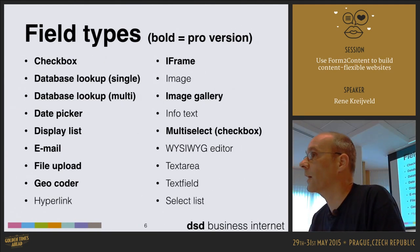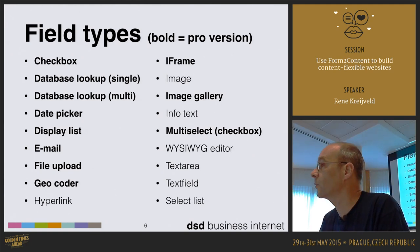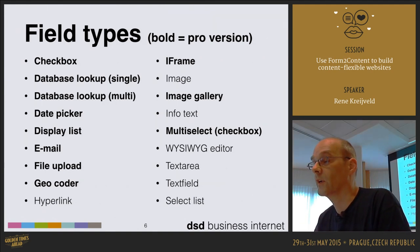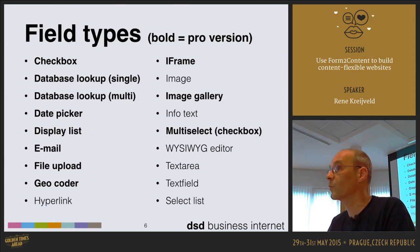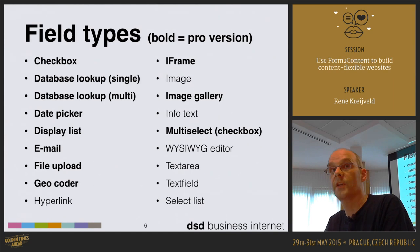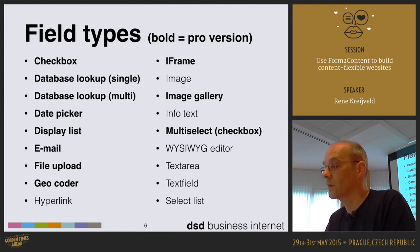There are many field types available, and Form2Content comes in two flavors: a free version and a pro version. The bold fields are the ones available in the pro version. These include checkbox fields, database lookups where you define an SQL statement to collect data from a database table, a date picker, display list, email field with validation, file uploads, a geocoder field to pick a location on a map and get latitude and longitude coordinates, hyperlinks, iframes, images, an image gallery, infotext, multi-select boxes, a WYSIWYG editor, a text area field, a normal text field, and select lists.